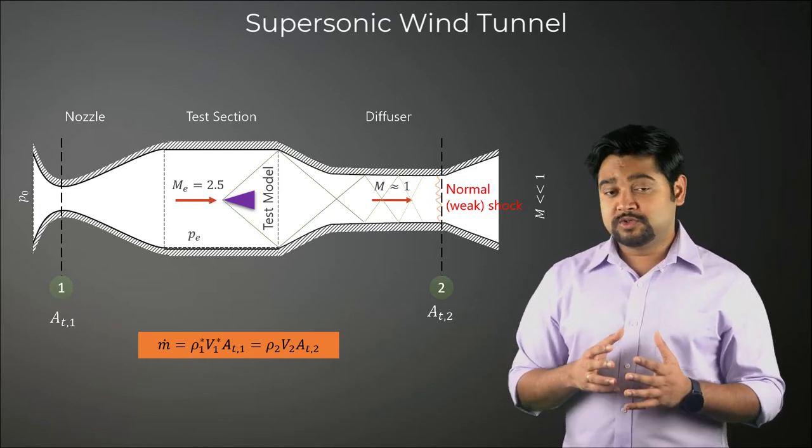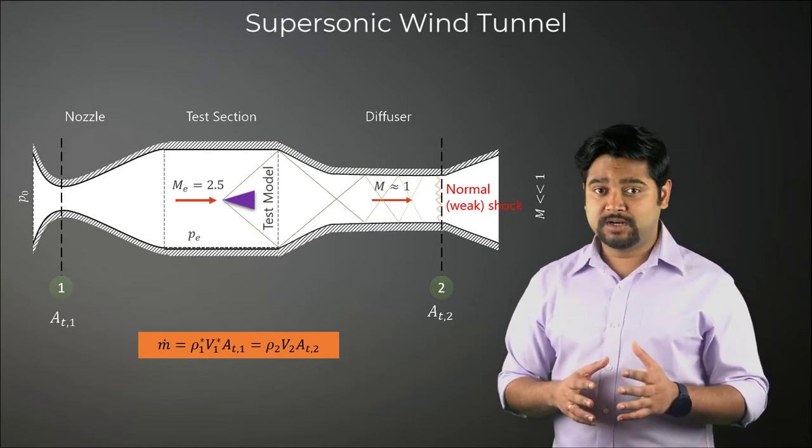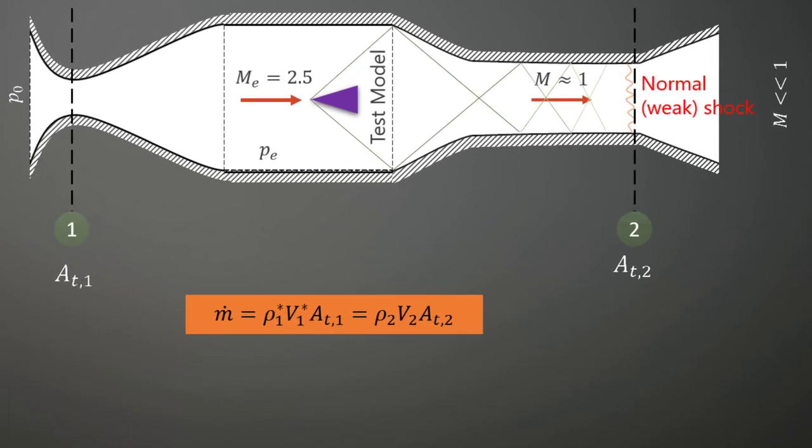If we assume sonic flow at both stations 1 and 2, we can get the following relation using the isentropic equations. Since the total pressure always decreases across shockwaves, P02 is less than P01 and thus the second throat must always be larger than the first throat.